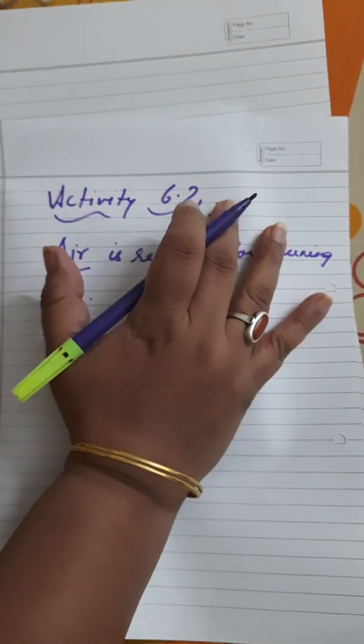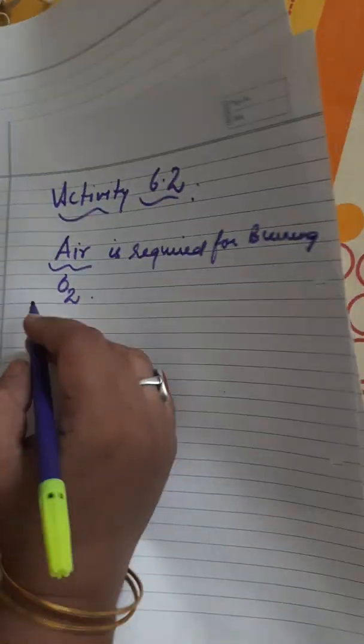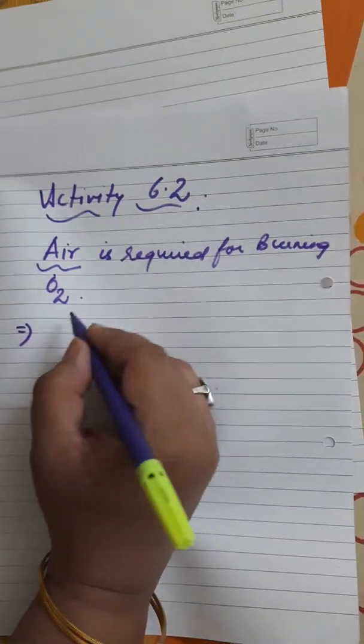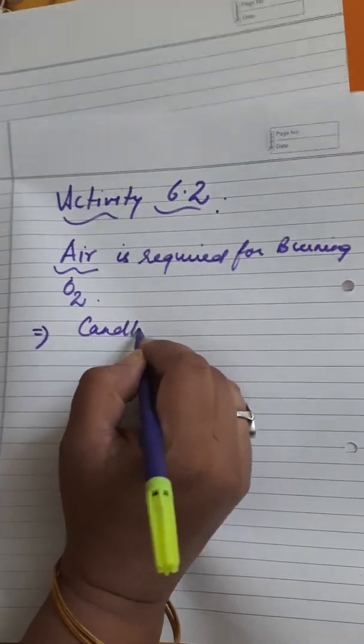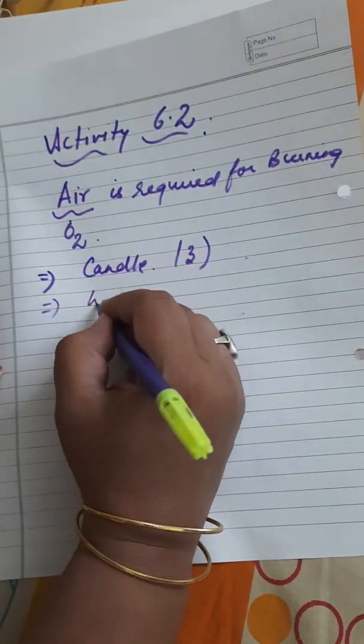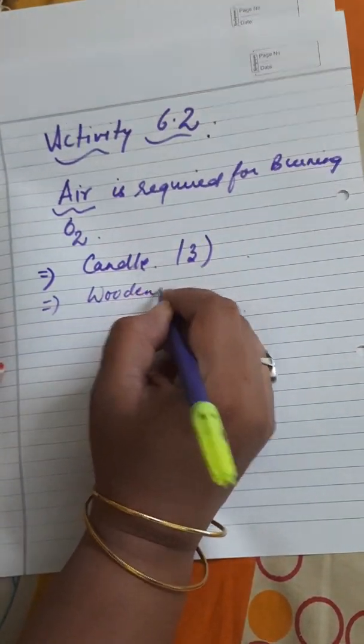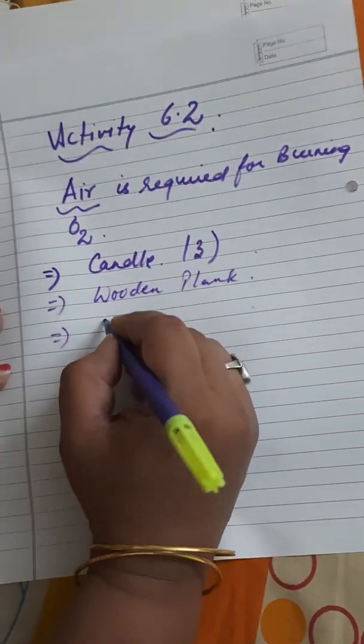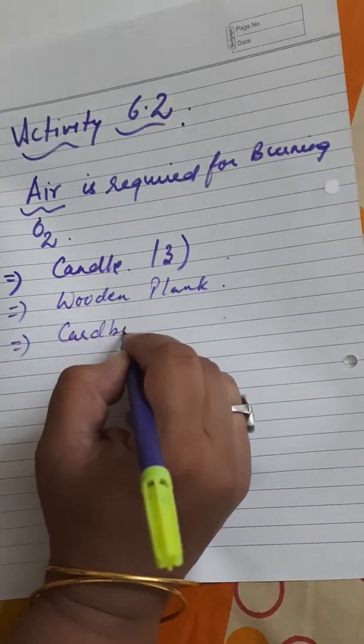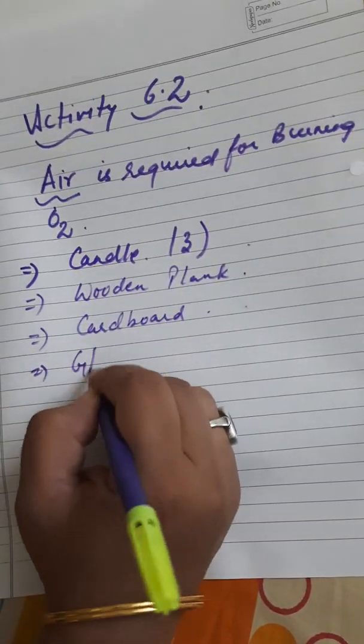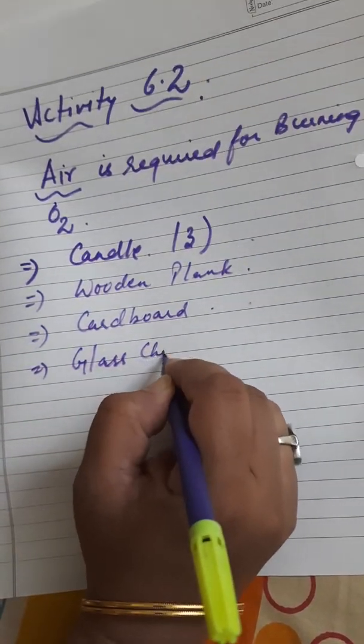For this activity, the required items are a combustible substance, which is candles, and we will take three candles. We require a wooden plank, then a cardboard and a glass chimney, small glass chimney.